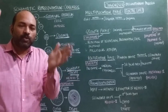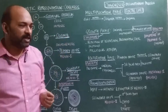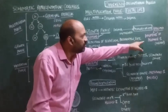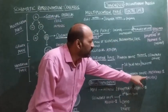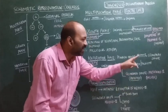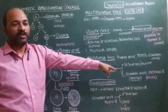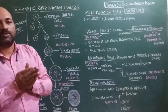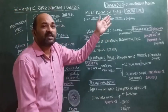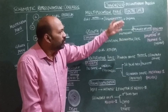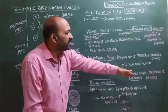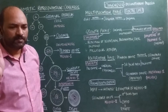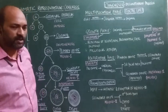Once the female attains puberty, there is resumption of meiosis and the primary oocyte is converted into the secondary oocyte — but again there is arresting at metaphase II until the sperm enters. Because there are these pauses or arrests in the process, the entire oogenesis is called a discontinuous process.